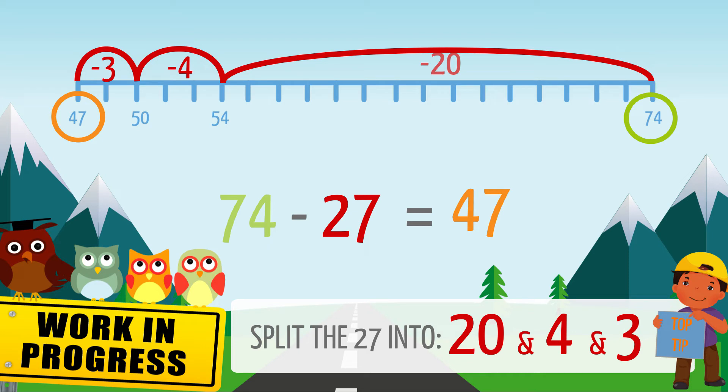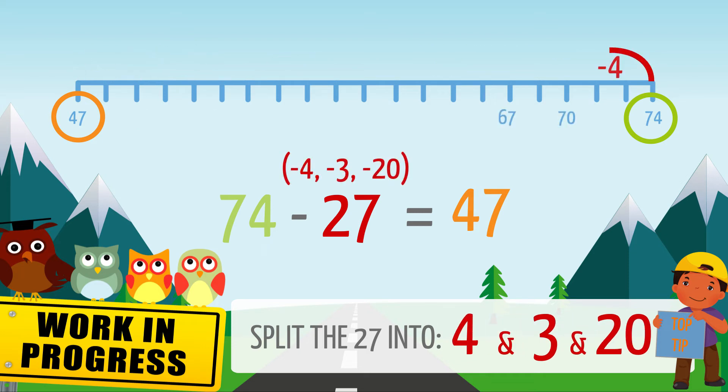The steps may be recorded in a different order. 74 minus 4 is 70. 70 minus 3 is 67. Finally, 67 minus 20 is 47.